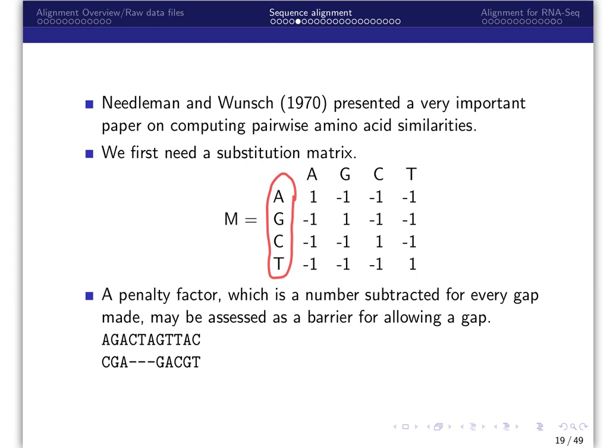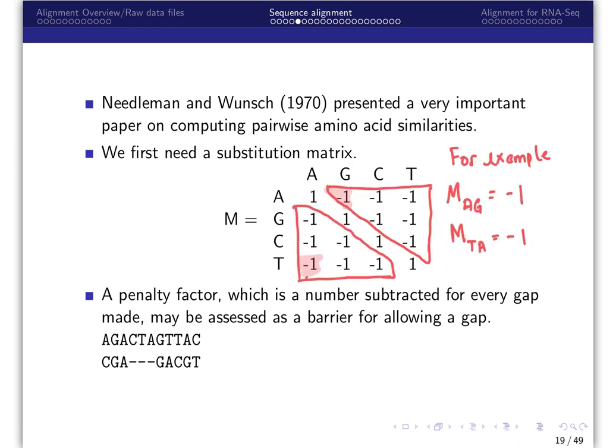A very basic substitution matrix would assign the value of 1 to the nucleotides that match and negative 1 to nucleotides that do not match. A penalty factor, which is a number subtracted for every gap made, may be assessed as a barrier for allowing a gap. In this example, we have a read and we have this possible alignment to the reference genome.